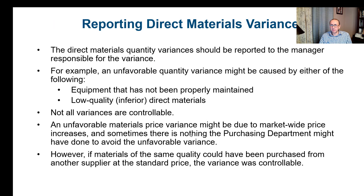When reporting direct material variances, the quantity variance should be reported to the manager responsible for it. An unfavorable quantity variance might be caused by improperly maintained equipment or use of low-quality material. Not all variances are controllable — an unfavorable material price variance might be due to market-wide price increases that the purchasing department could not avoid. However, if material of the same quality could have been purchased from another supplier at standard price, the variance would be controllable.